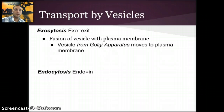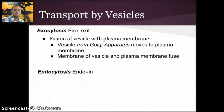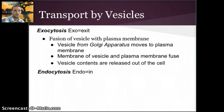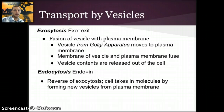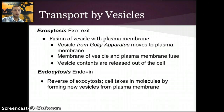Usually, a vesicle from the Golgi apparatus moves to the plasma membrane. The membrane of the vesicle and the plasma membrane fuse — since both are made of a phospholipid bilayer — and the vesicle contents are released outside the cell. Endocytosis is the complete opposite but essentially the same process. 'Endo' means in, so it's just the reverse: a vesicle outside the cell fuses with the plasma membrane, and the contents of that vesicle are released into the cell.